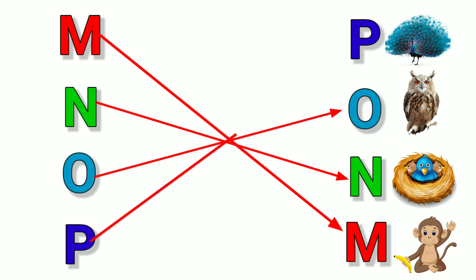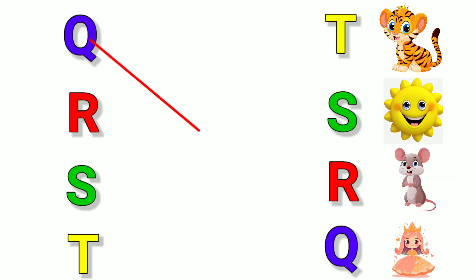P, P for Peacock. Q, Q for Queen. R, R for Rat.